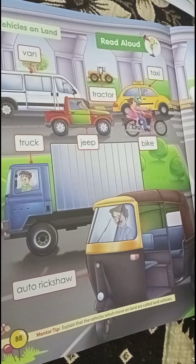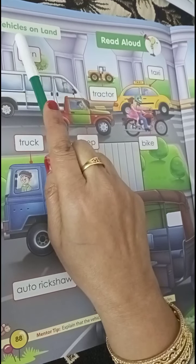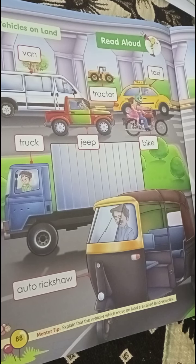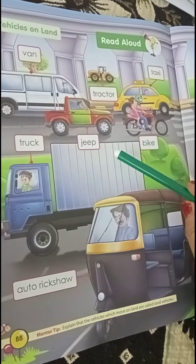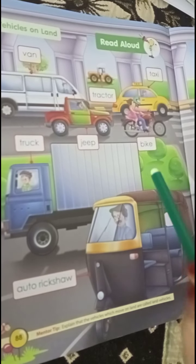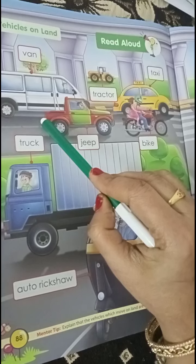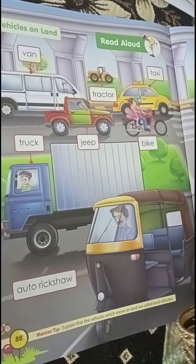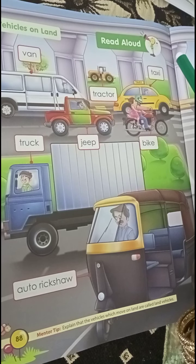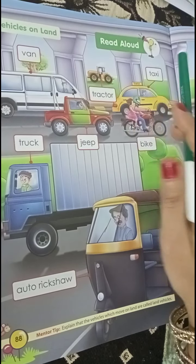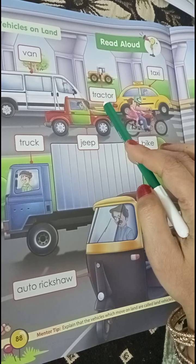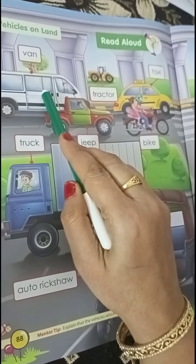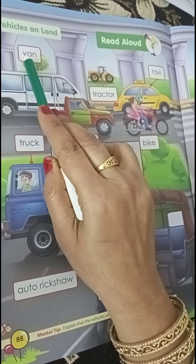Good morning children. In this video we are going to see the vehicles on land — that means the vehicles which move on land. These vehicles are called land vehicles. You just have to identify the vehicle and you should be able to read the names of these vehicles. Just read the names and identify the vehicles. This is a van.